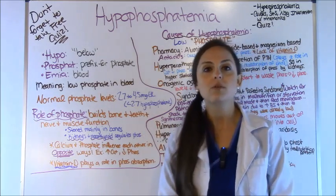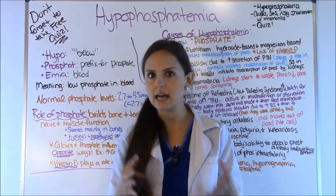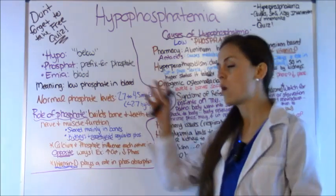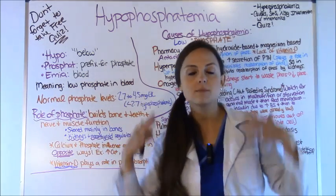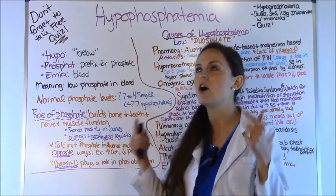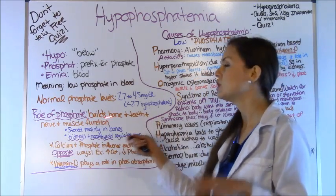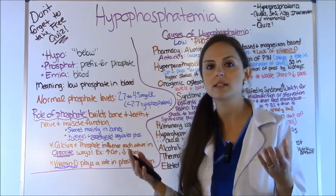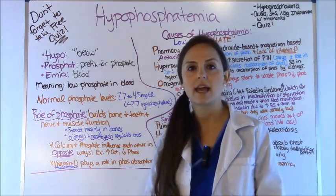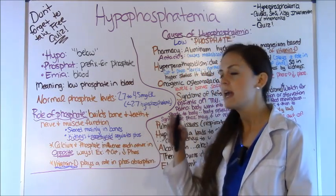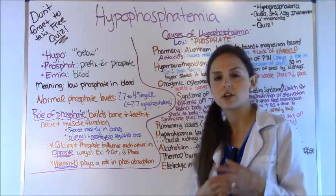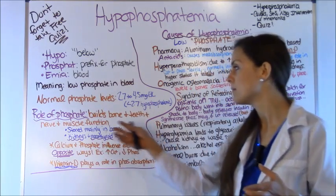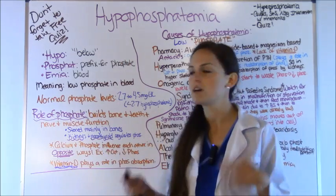In order to understand the causes and why you're seeing these signs and symptoms in patients with low phosphate levels, you have to know how phosphate works in the body, where it's stored, and what system excretes it. Phosphate plays a huge role in building your bones and teeth, so if you have low phosphate, you're at risk for broken bones. It also plays a vital function in muscle and nerve function.